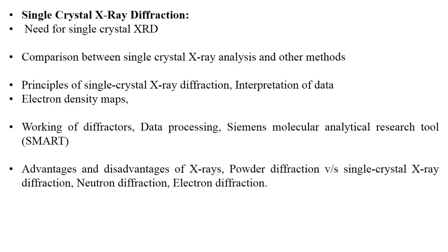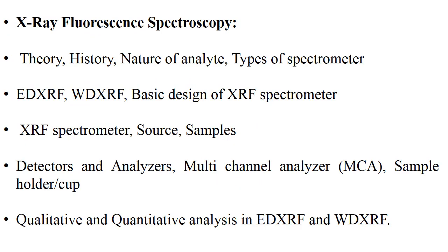Diffractions can be done by X-rays, neutrons, or electrons. We will also discuss neutron diffraction and electron diffraction. X-ray fluorescence spectroscopy topics include theory, history, nature of analyte, types of spectrometers, EDXRF, WDXRF, and basic design of XRF spectrometers.